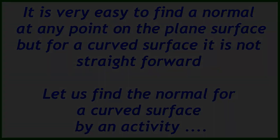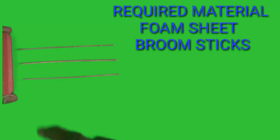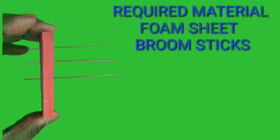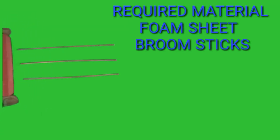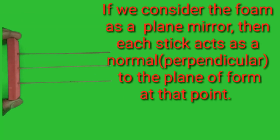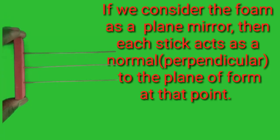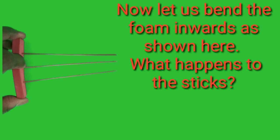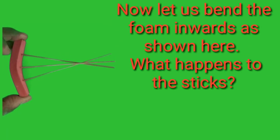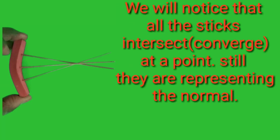For this activity, we require a foam sheet and broomsticks. If we consider the foam as a plane mirror, then each stick acts as a normal to the plane of the foam at that point. Now, let us bend the foam inwards as shown here. We will notice that all the sticks intersect at a point. Still, they are representing the normal.